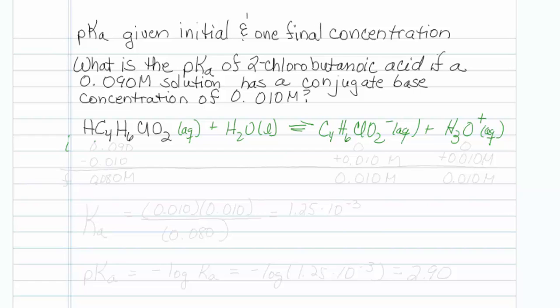Now on the initial row we have 0.090 of our starting acid and no conjugate base or hydronium, and we're told a final concentration of conjugate base, so that would be the butanoic acid once it's lost its proton, and that is 0.010 molar.